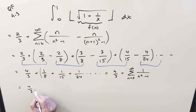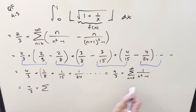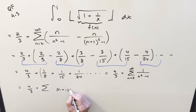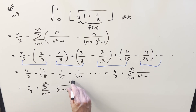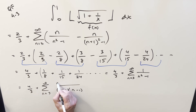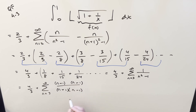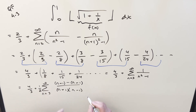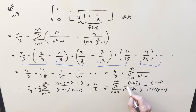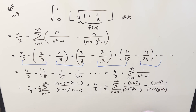Everything to the right gives 4 thirds in front, plus the sum from n equals 3 to infinity of 1 over n squared minus 1. To simplify further, I write n squared minus 1 as (n+1)(n-1) by difference of squares. Then I write 1 over (n+1)(n-1) as one half times [1 over (n-1) minus 1 over (n+1)], which is a telescoping form — breaking into two fractions after canceling the n plus ones and n minus ones, leaving ones in the numerator.